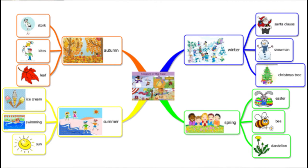Each season becomes a sub-topic, and each part of the year is represented as a branch. For example, in Summer, you can add sub-topics such as sun, swimming, ice cream, and so on. You can use sub-branches for any additional topics under Summer.